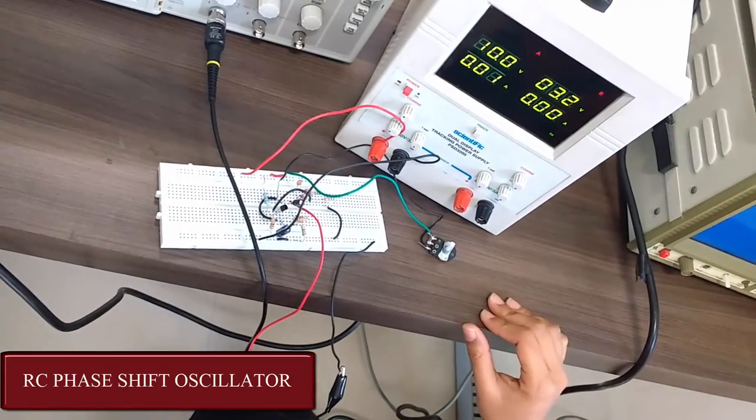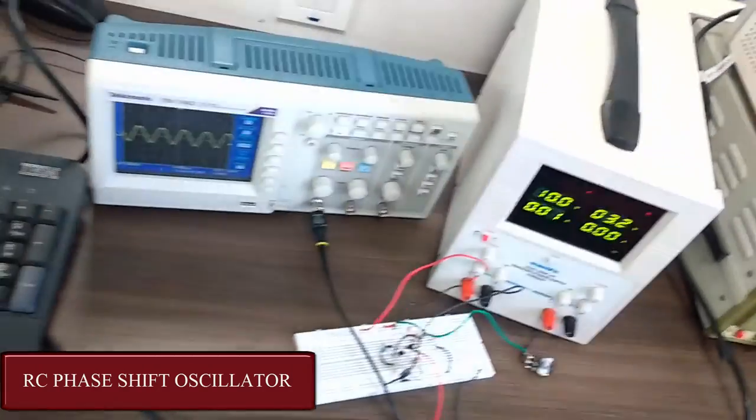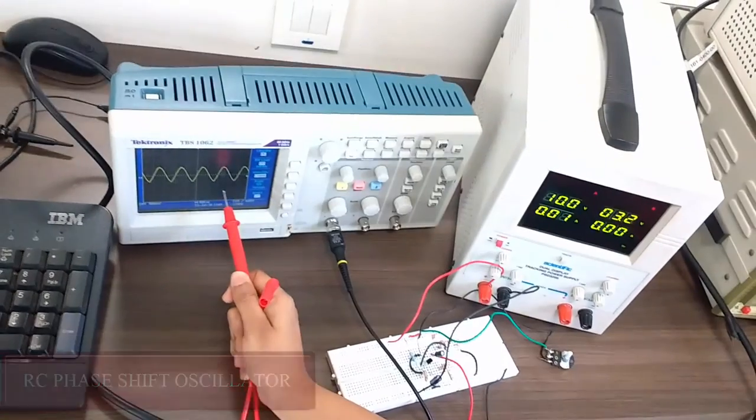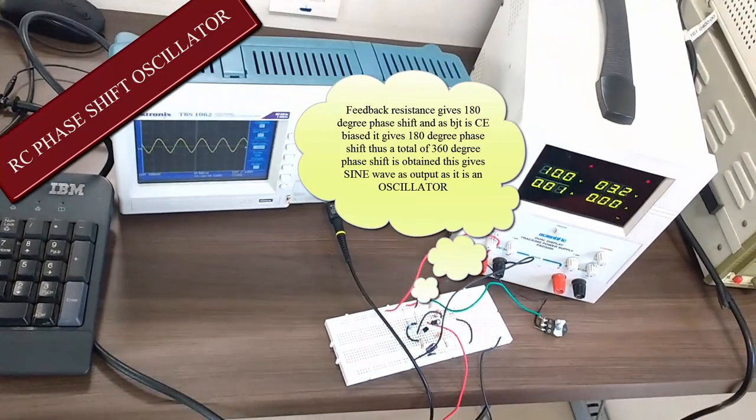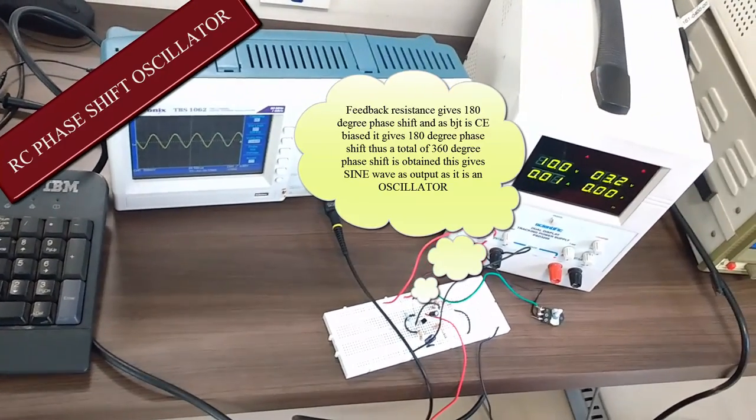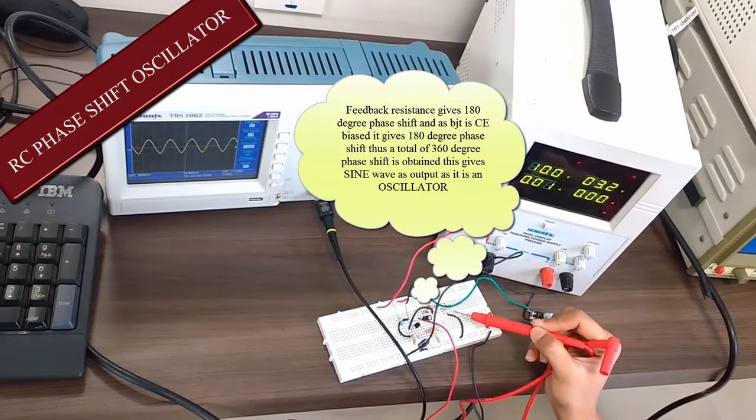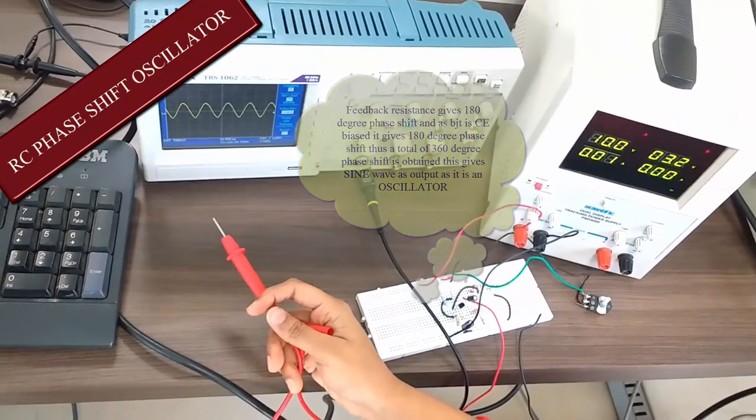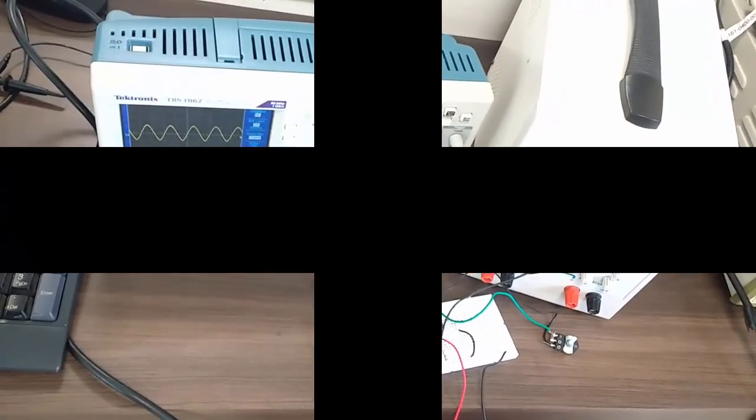After giving the output we can see that a sine wave is obtained. This is what happens in RC phase shift oscillator. Here this feedback results into a sine wave. That's the oscillator. Thank you for watching.